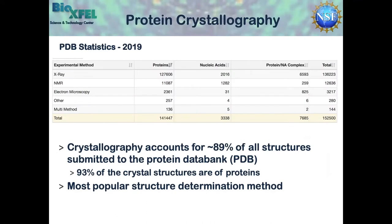Looking at PDB statistics from 2019, it's pretty clear that X-ray crystallography has been the workhorse of structural biology for a long time. In 2019, there were over 130,000 structures contributed by X-ray crystallography. There are other productive structural methods: NMR contributed upwards of 12,000 structures, and cryo-electron microscopy has also contributed thousands of structures. The single particle cryo-EM work is quickly gaining ground and being really productive for structural biology.